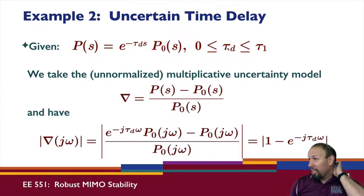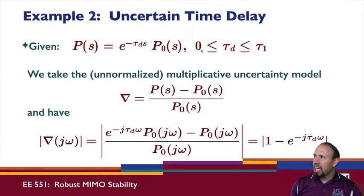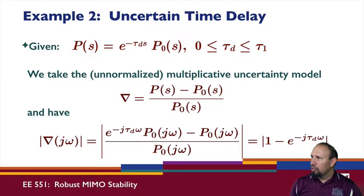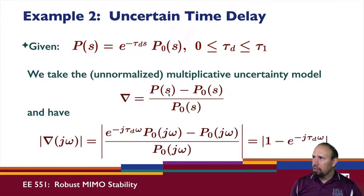We know the time delay is somewhere in that range but not exactly where. I define the quantity delta as (P - P0) / P0, which is like a percent difference. The magnitude of delta at j*omega is given by an expression where P0 cancels out — that's part of why we use this formulation for the uncertainty. What remains involves only the uncertain quantity tau_d.